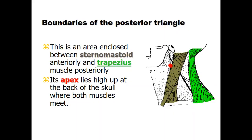The boundaries of the posterior triangle lie between the sternocleidomastoid muscle and the trapezius muscle, with the clavicle forming the inferior boundary. More precisely, it is between the posterior border of the sternomastoid and the anterior border of the trapezius muscle, with the middle portion of the clavicle below. The apex lies high up at the back of the skull where the two muscle borders meet, and the occipital artery passes through that region.